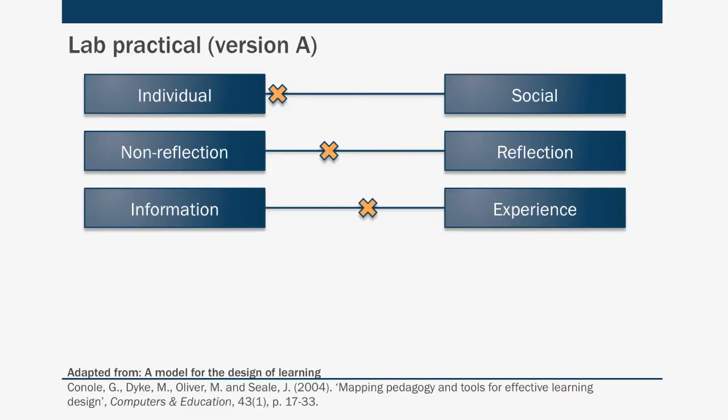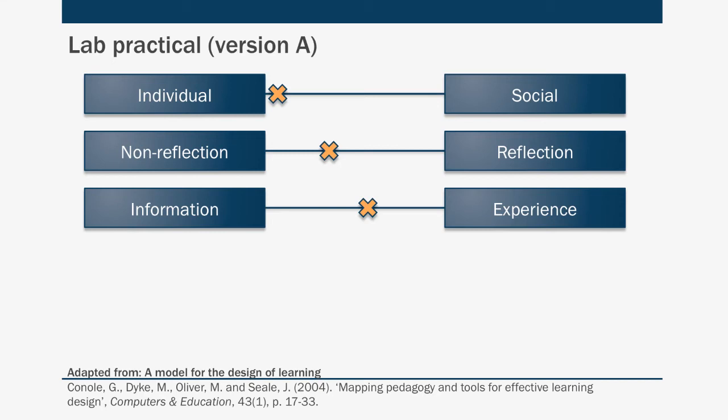You can then start thinking about how technology can support those typical learning characteristics. Looking at a lab practical — not one of Conole's examples — an individual in a physical environment conducting a lab practical on their own might not be very reflective because they're trying to keep up with the pace of the experiment. It's a mix between information and experience: there may be stimulus material guiding them, but they're also learning from doing and engaging with the practical experiment.